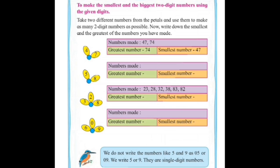Let's start with the second sum. So the numbers are 5 and 8. From that we can make two digit numbers that are 58 and 85. So which number is greater now? 85. So in the greatest number you will write the number 85, and in the smallest number you will write the number 58.